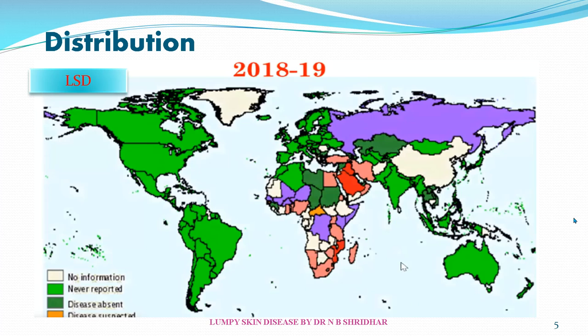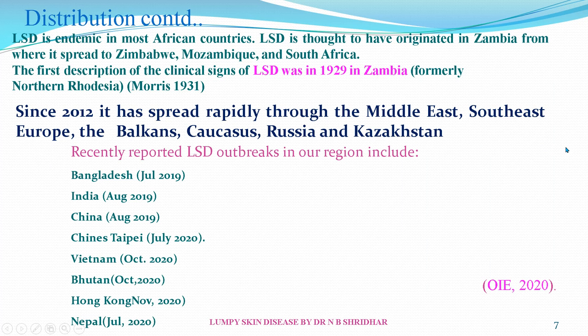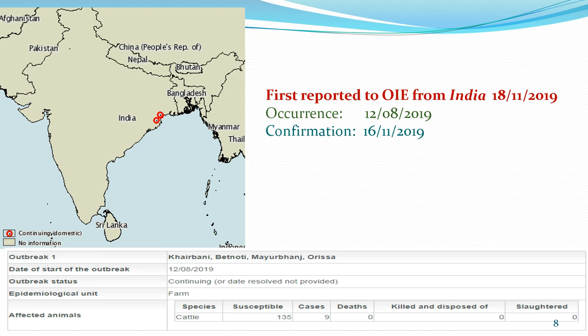During 2018 and 2019, outbreaks were reported in countries that had never previously reported LSD. The disease originated from Zambia in 1929 and has since distributed to different parts of the Middle East, South East Asia, Europe, the Balkans, Caucasus, Russia, and Kazakhstan. Recently, outbreaks have been seen in Bangladesh, India (August 2019), China, Japan, Vietnam, Bhutan, Hong Kong, and Nepal.